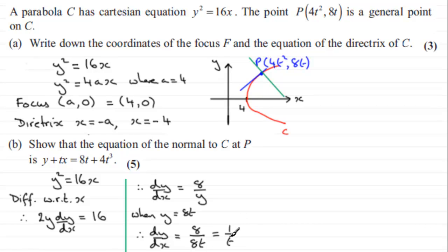And this is a well-known result anyway, really, for the gradient at any point x on a parabola that has this particular format. It's always 1 over t. So, if you knew that result, I suppose you could have skipped that stage.